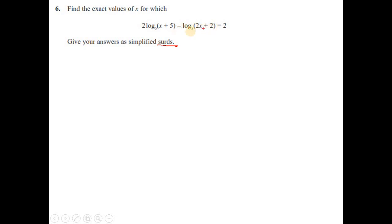If you see that you have just two terms involving log - log₅(x+5) minus log₅(2x+2) - and both are on the left-hand side, so it's quite easy to solve. You don't need to rearrange, you just need to apply logarithmic laws.